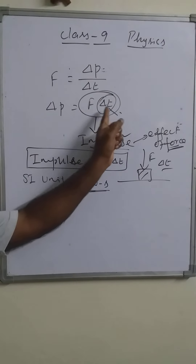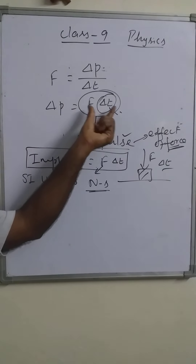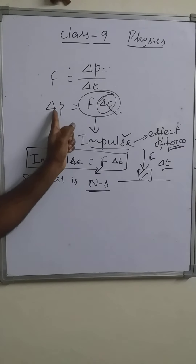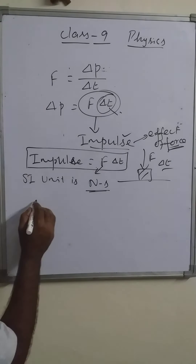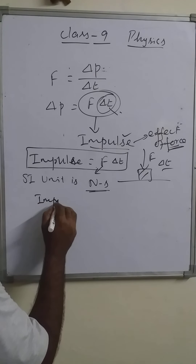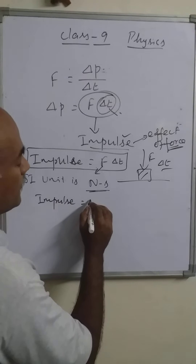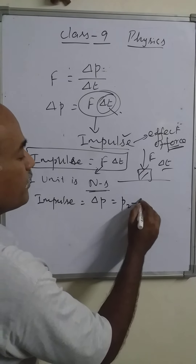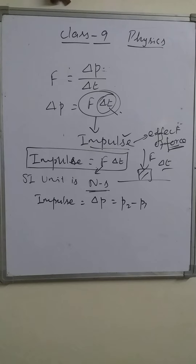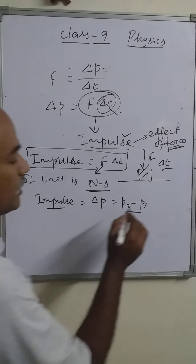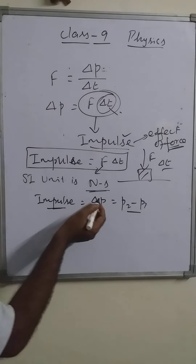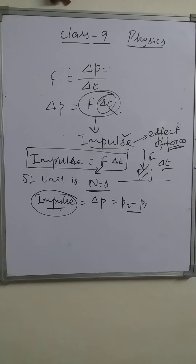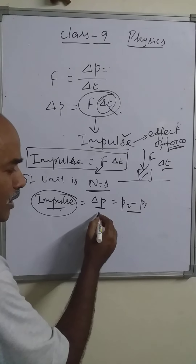But the force multiplied by time — the product of force and time interval — is also equal to change in momentum. So impulse is also equal to the change in momentum: that is final momentum minus initial momentum.